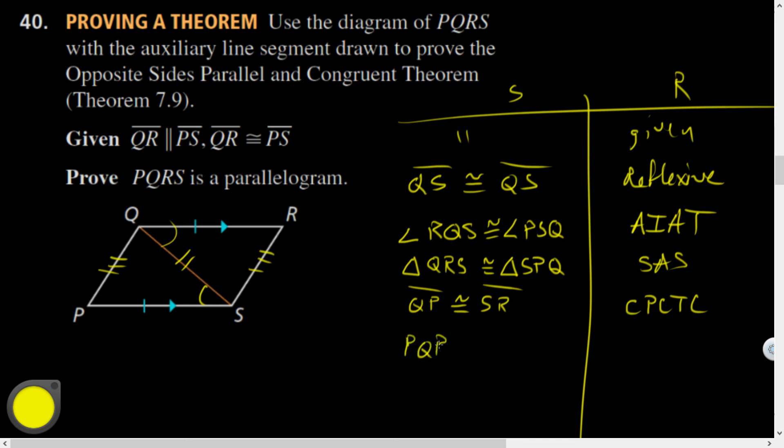And then I could say, P, Q, R, S is a parallelogram by, I just used opposite sides. So that's going to be parallelogram opposite sides converse. I also could have made conclusions about these angles, and then proven that these sides were parallel, and then using definition of parallelogram, proven it was a parallelogram. Lots of different options.